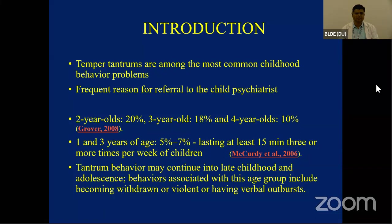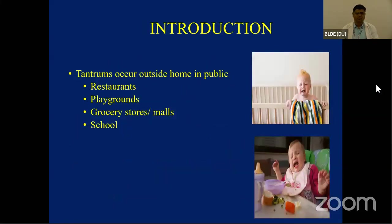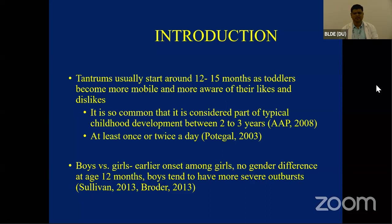Tantrum behavior may continue into late childhood and adolescence, sometimes including becoming withdrawn, violent behavior, or verbal outbursts. Tantrums can occur not only at home but outside — in public places like restaurants, playgrounds, grocery stores, malls, and school. Tantrums usually start around 12 to 15 months of age, and as toddlers become more mobile and aware of their likes and dislikes, it is so common that it is considered part of typical childhood development between 2 and 3 years. They tend to happen at least once or twice a day.